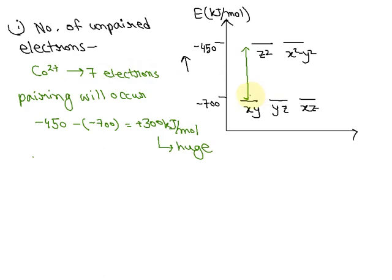If we try to fill this we will get 1, 2, 3, 4, 5, 6, and the 7th electron here. So the number of unpaired electrons will be 1.